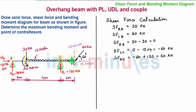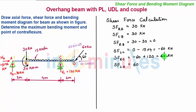We move the section towards point D by taking a section towards the left of D and very near to it. The only addition of force between these two sections is the same UDL of 15 kN/m intensity acting over a span of 2 meters. So the shear force towards the left of D equals 60 kN minus 15 kN/m multiplied by 2, giving a value of 30 kN.